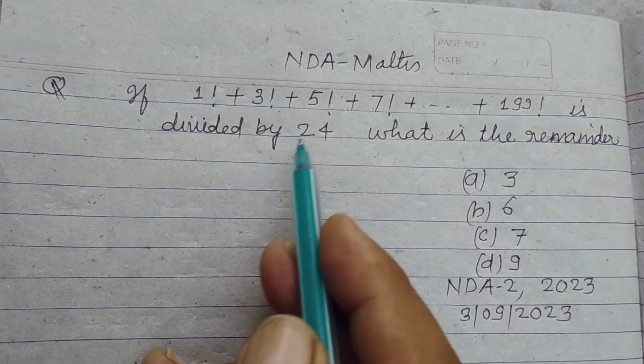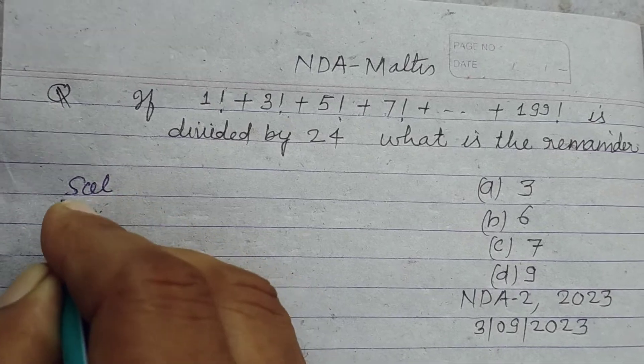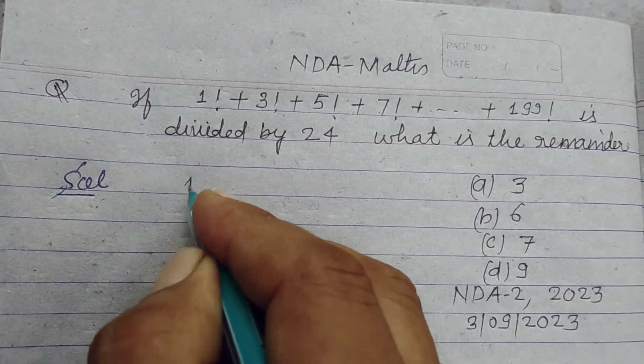...is divided by 24, what is the remainder? Students, very simple question, also asked in NDA first, such type questions. So factorial 1...